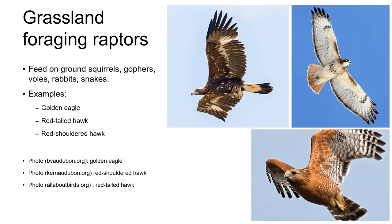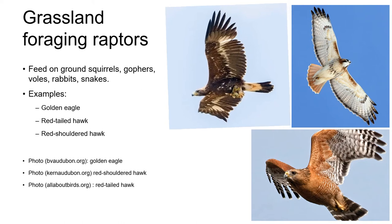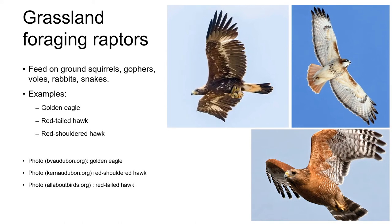The ground squirrels, gophers and other small mammals such as the California vole, plus reptiles such as snakes, are important food sources for a range of birds of prey, including here on the Monterey Bay, golden eagles, red-tailed hawks and red-shouldered hawks. These raptors are reliant on grassland because the low-growing vegetation provides the long, clear line of sight they need to both see and then catch their prey.